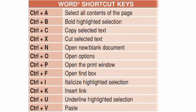CTRL+F. CTRL+F is the shortcut key of MS Word which is used for the purpose of opening the find box. If we want to find any word in the text or paragraph, we use CTRL+F. After pressing CTRL+F, the find box will open and we type the word we require. اگر ہم MS Word میں کوئی word تلاش کرنا چاہیں تو اسکے لیے CTRL+F استعمال ہوتی ہے۔